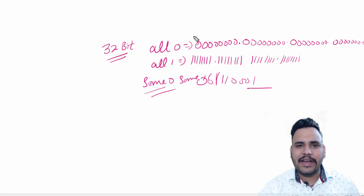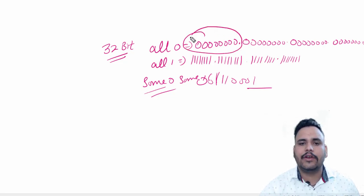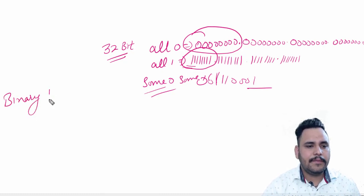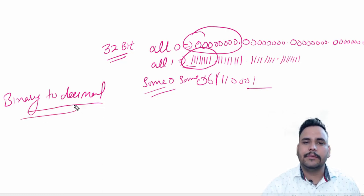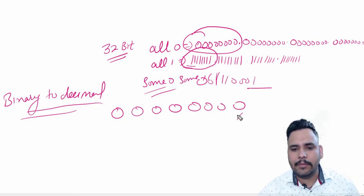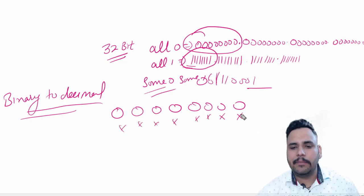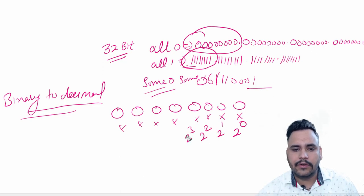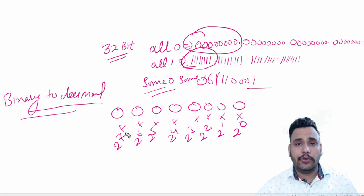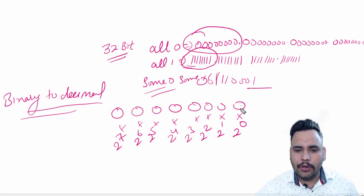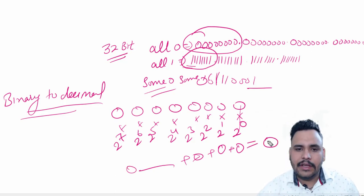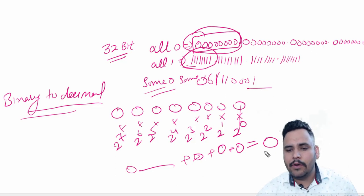So if we want to get the lowest IP address, we go for binary to decimal conversion of all-zero bits, and if we need the highest IP address, we go for all-one bits. To convert binary to decimal, each and every bit is multiplied with 2 raised to the power 0, 1, 2, 3, 4, 5, 6, 7. These are prerequisites of CCNA — you need to know the binary to decimal concept. So 0 multiplied by 2 raised to power 0, plus 0 multiplied by 2 raised to power 1, and so on — everything becomes 0. So 8 zeros in binary becomes 0 in decimal.